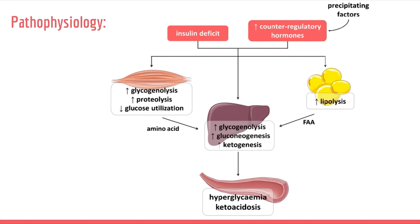This leads to glycogenolysis, proteolysis, and decreased glucose uptake in muscles. In adipose tissue, there is more lipolysis — increased free fatty acids. In the liver, there is more glycogenolysis, more gluconeogenesis, and more ketogenesis. Ultimately, all of this leads to two main entities: hyperglycemia and ketoacidosis — the core pathogenesis of DKA.